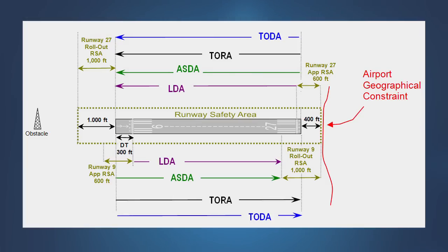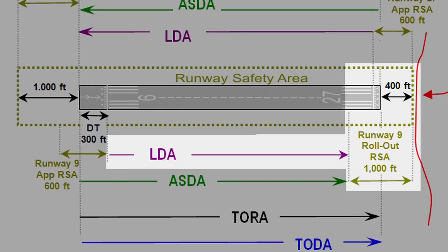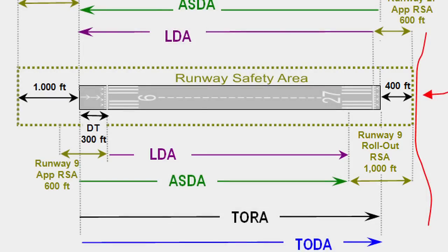It is important to understand that the application of declared distances has no bearing on the operational use of the runway for taxi, takeoff, and landing rollout operations, provided the runway surface is appropriately marked as usable runway. For example, landing distance available for runway 9 must be used when showing compliance with the landing distance requirements specified in the operating rules or listed in the airplane's operating limitations or when making a before-landing performance assessment. The landing distance available is less than the physical runway length not only because of the displaced threshold, but also because of the subtractions necessary to meet the runway safety area beyond the far end of the runway. However, during the actual landing operation, it is permissible for the airplane to roll beyond the unmarked end of the landing distance available.